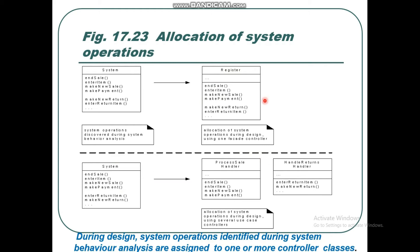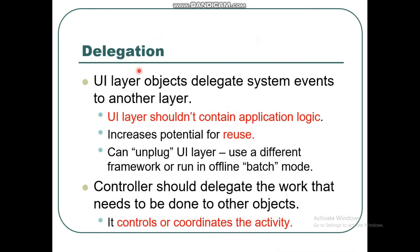We can also have multiple controller classes: a register, a process handler, and a handle returns handler. Allocation of system operations during design can use several use case controllers. During design, system operations identified during system behavior analysis are assigned to one or more controller classes.